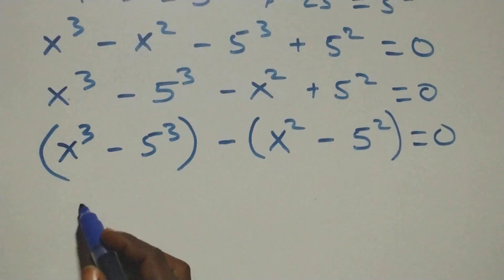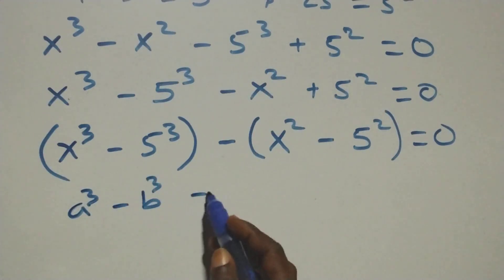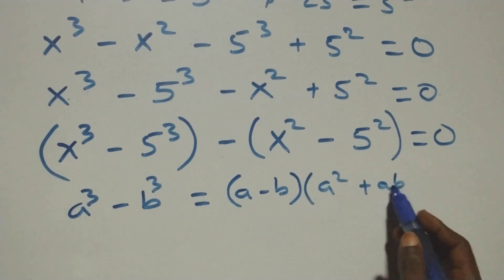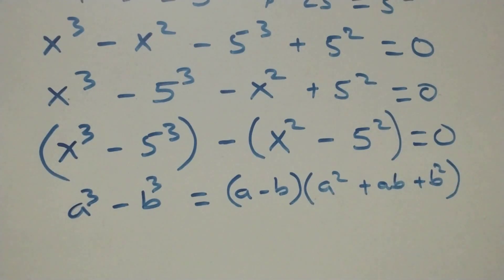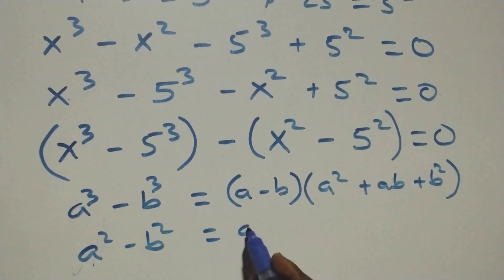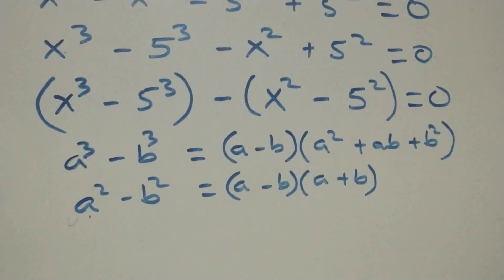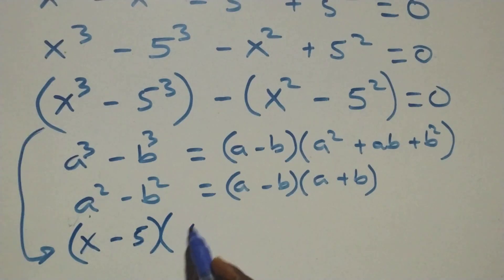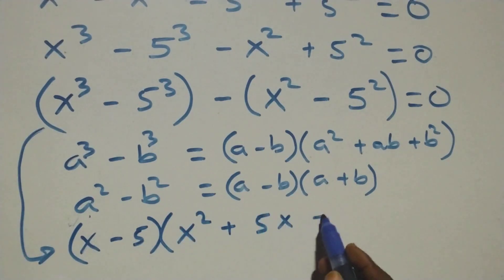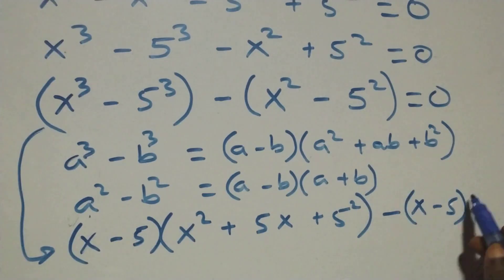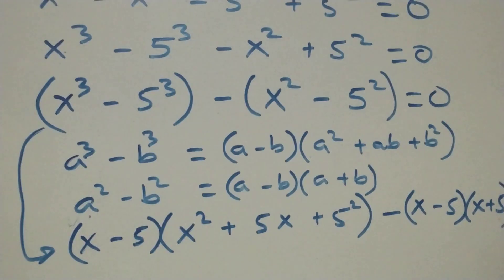Then, this first bracket follows the identity: when we have a raised to power 3 minus b raised to power 3, this is the same as a minus b, open brackets, a squared plus ab plus b squared. When we apply this here, and also factor the second bracket, what we have becomes x minus 5, into brackets, x plus 5, equals to 0 here.